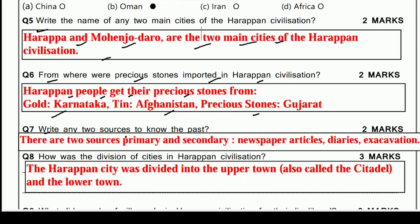Question 7: Write any two sources to know the past — that is, which sources tell us about history? There are two types of sources: primary and secondary. Examples include newspapers and newspaper articles, diaries if found, and excavation — meaning archaeological digging also tells us what history was like.